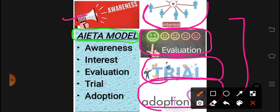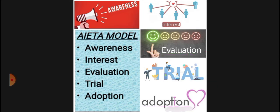What is the AITA model? First we give awareness, then interest develops, then we evaluate, then we trial, and then we adopt. Awareness, Interest, Evaluation, Trial and Adoption — this is actually the AITA model, also called the adoption model.